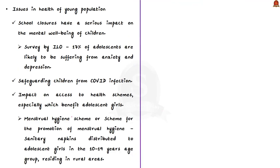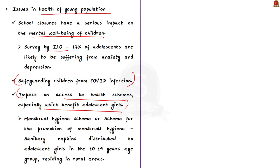Regarding health issues of the young population: school closures have a serious impact on mental well-being. According to an International Labour Organization survey, around 17% of adolescents are likely to be suffering from anxiety and depression. The second issue is safeguarding children from COVID infections. Thirdly, access to health schemes has been impacted, especially those benefiting adolescent girls — for example, the Menstrual Hygiene Scheme under the Adolescence Reproductive and Sexual Health Component of the National Health Mission, which distributes sanitary napkins to adolescent girls aged 10 to 19 in rural areas. School closures have impacted access to such schemes.